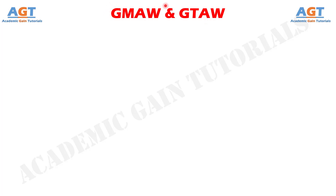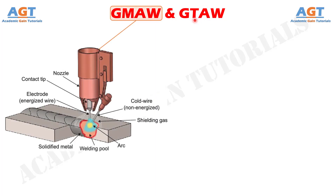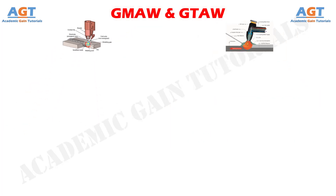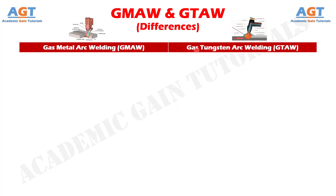There are several arc welding processes; two of them are gas metal arc welding and gas tungsten arc welding. Gas metal arc welding is one such arc welding process where the arc is constituted between a consumable wire electrode and the conductive base plates. On the other hand, gas tungsten arc welding is another arc welding process where the arc is constituted between a non-consumable electrode and the conductive base metals. Let's look into the basic differences between gas metal arc welding and gas tungsten arc welding in a tabular form.